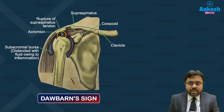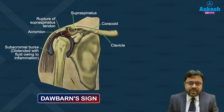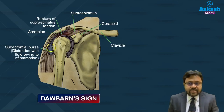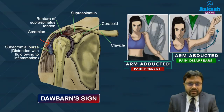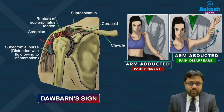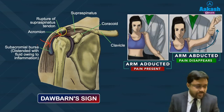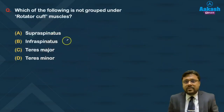There is a bursa present just below the acromion process known as the subacromial bursa, which extends into the zone below the deltoid. Quite often there is a tear of the supraspinatus muscle, in which case this bursa gets inflamed — known as subacromial bursitis. When the arm is adducted, pressing just below the acromion process elicits pain. But if you abduct the shoulder, the bursa shifts upward beneath the acromion, so pressing over the deltoid no longer elicits pain. This is known as Dawbarn's sign.